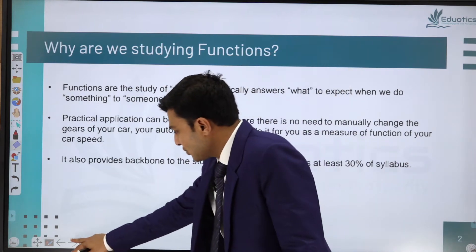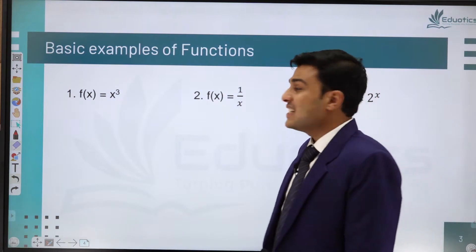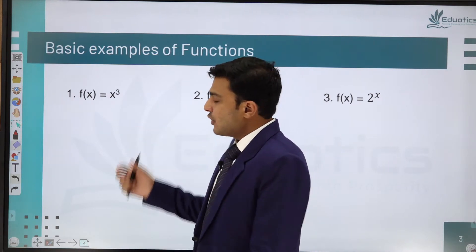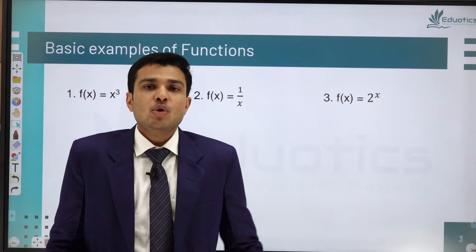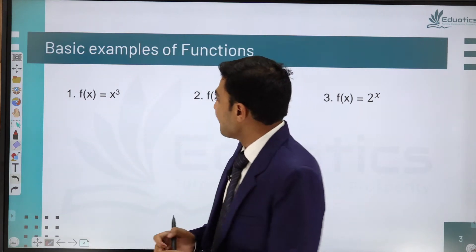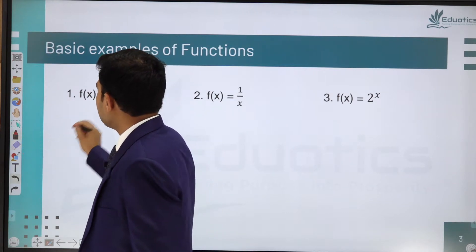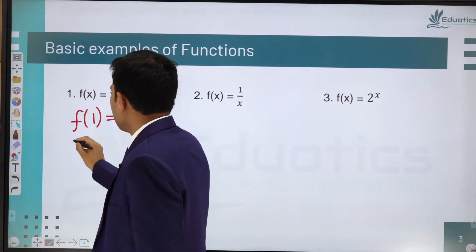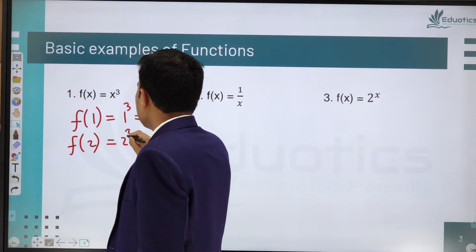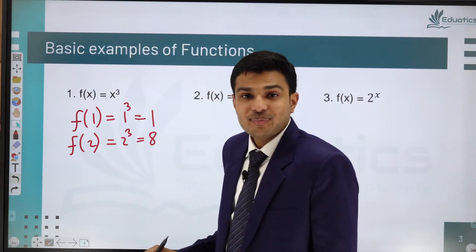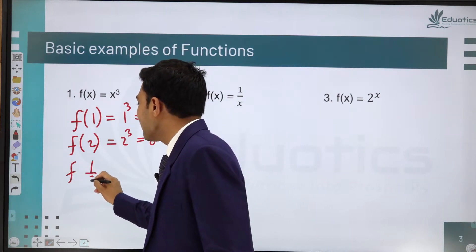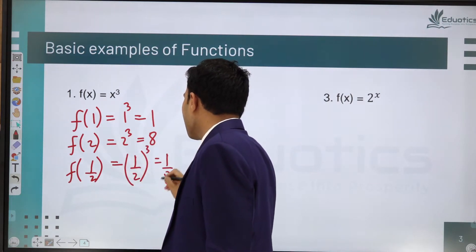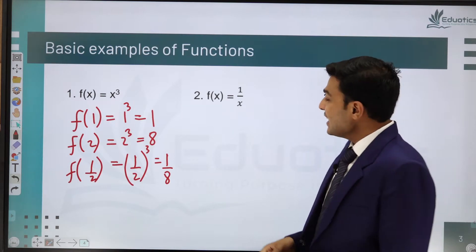Let's start with the very basic example of a function. First, I have taken f(x) = x³. In a function, we put some input and accordingly get some output. If you put input 2, the output is 2³ = 8. If you put input 1/2, the output is (1/2)³ = 1/8.